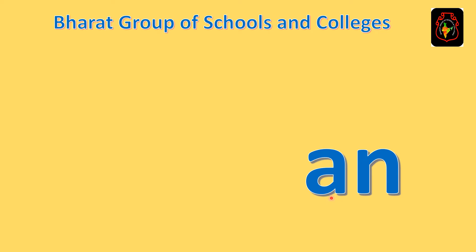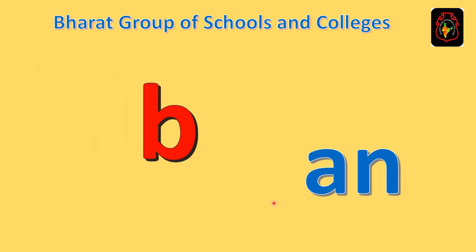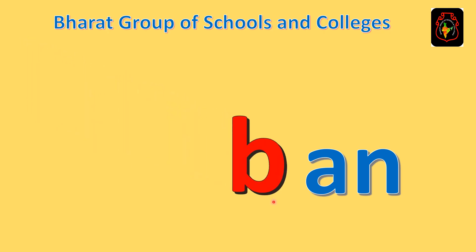Here we are having two letters, A and N. With these two letters, we are going to add one more letter — Letter B. So, what will it become? It will become B, A and N — BAN.